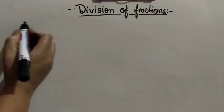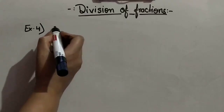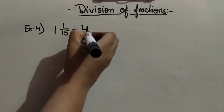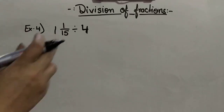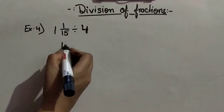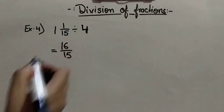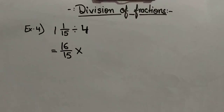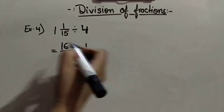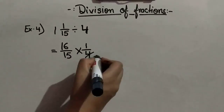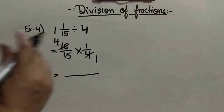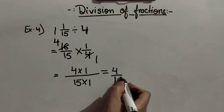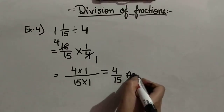One more example: 1 whole 1 upon 15 divided by 4. Change the first mixed number into an improper fraction: 15 ones are 15, plus 1 is 16, giving 16 upon 15. Turn the division sign into a multiplication sign. The reciprocal of 4 is 1 upon 4. Simplify: 4 ones are 4, 4 fours are 16. Multiply the fractions: 4 multiplied by 1 upon 15 multiplied by 1 gives 4 upon 15. This is our answer.